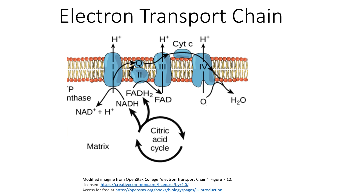The reason that complex two was not discussed is because the electrons from NADH have nothing to do with complex two. Complex two is actually an enzyme within the Krebs cycle, or citric acid cycle, and what it does is oxidize an intermediate within the Krebs cycle.